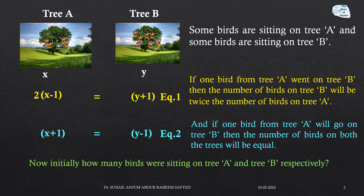If one bird from tree A goes to tree B, then the number of birds on tree B will be twice the number of birds on tree A. This means tree A becomes x minus 1 and tree B becomes y plus 1, because one bird is moving from A to B. So y plus 1 equals 2 times (x minus 1), which gives us 2x minus 2 equals y plus 1, or 2x minus y equals 3. We will call this equation number 1.